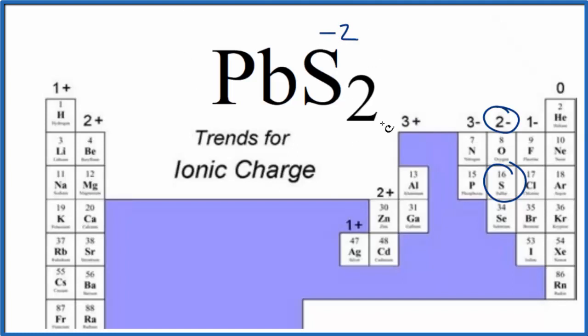Since we want it to all add up to zero, 2 times minus 2, that's minus 4, the lead has to be plus 4. So the oxidation number on the lead in PbS2, lead four sulfide, is plus 4.